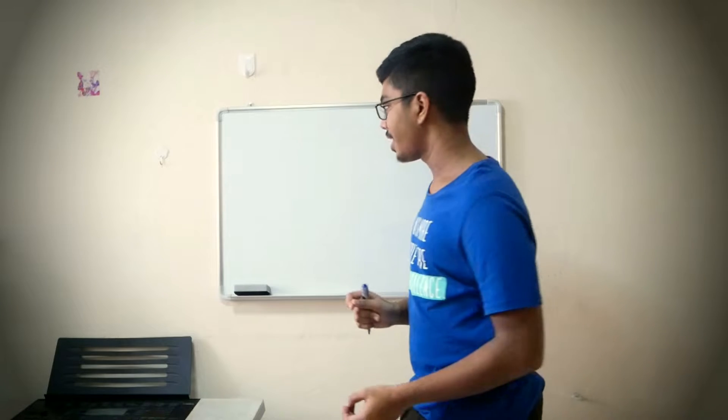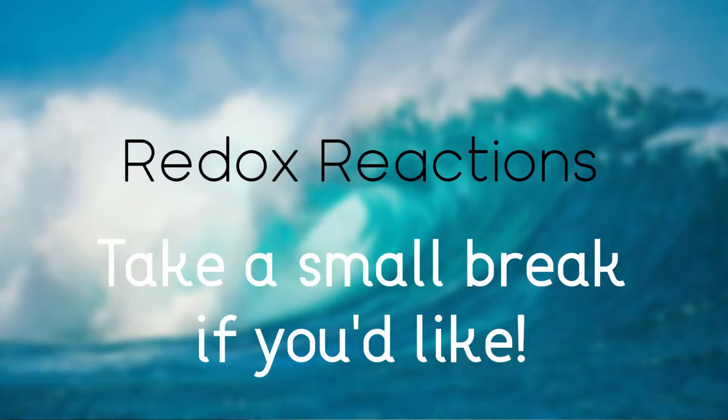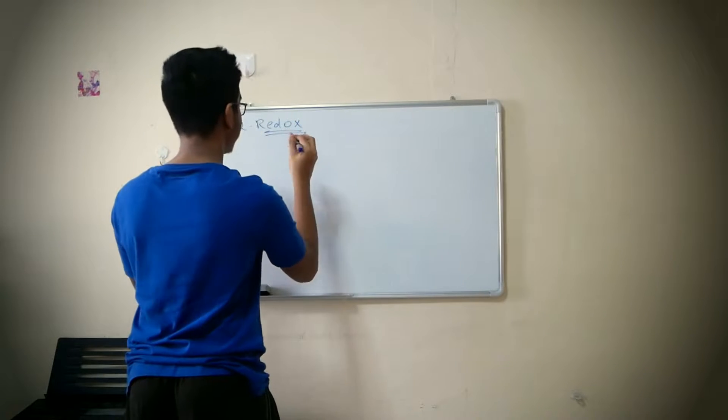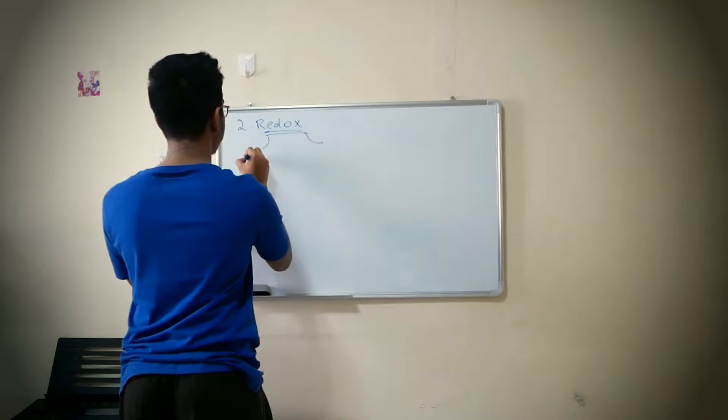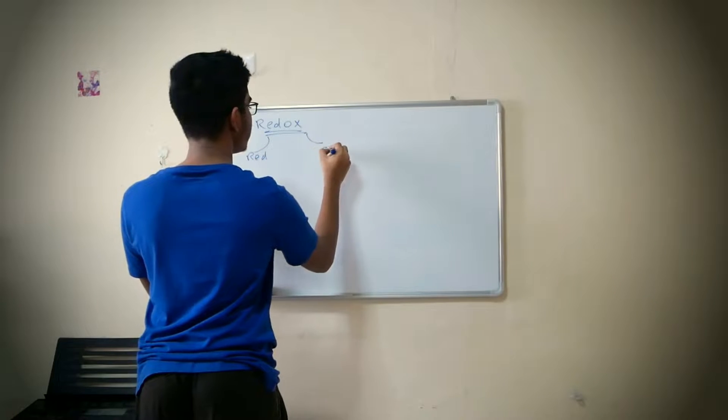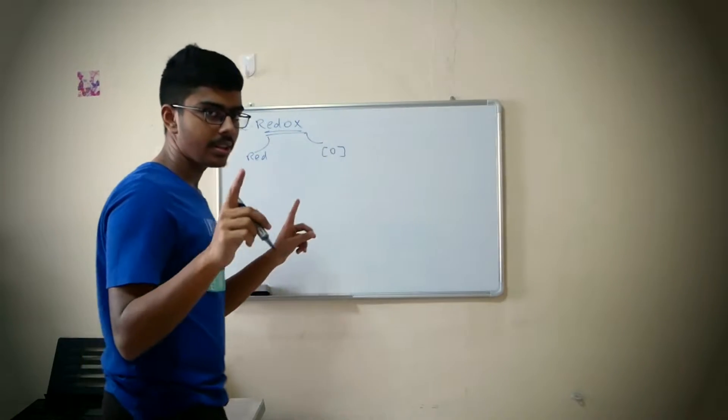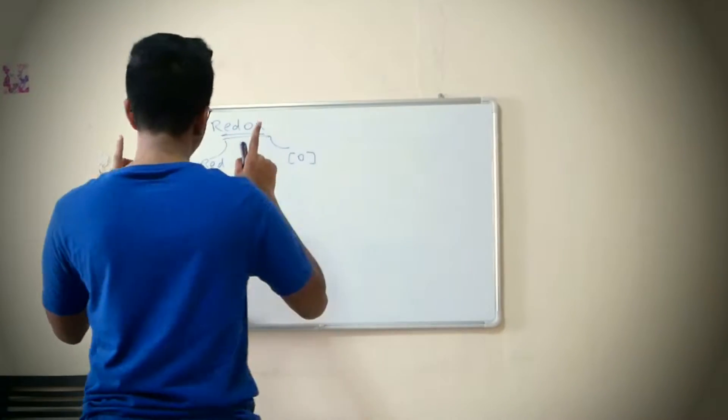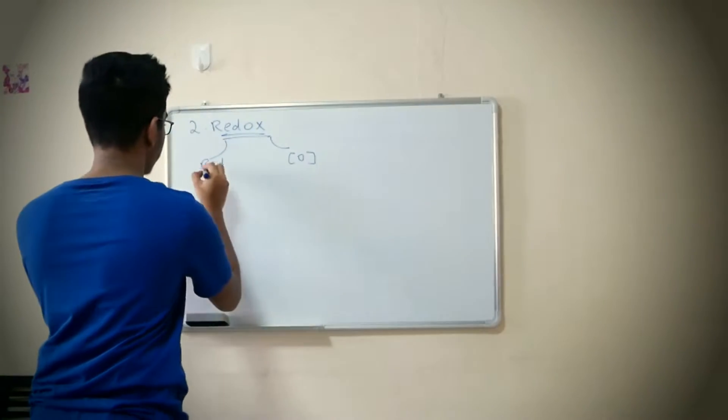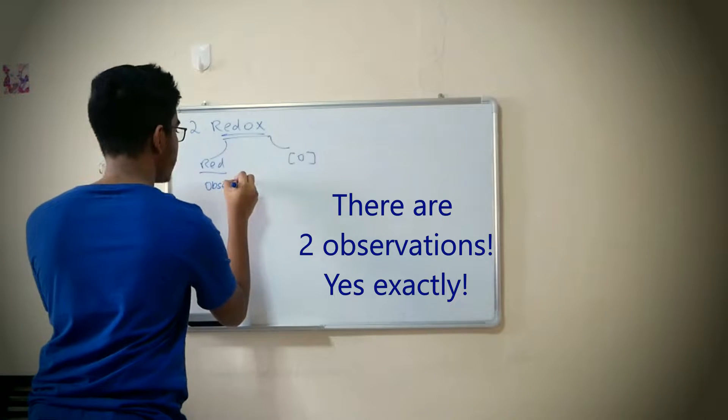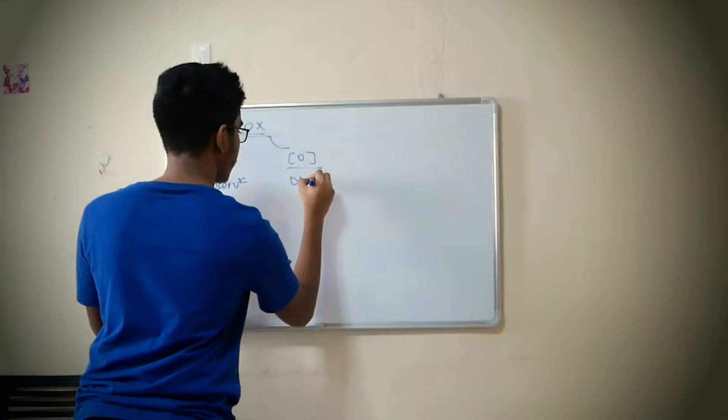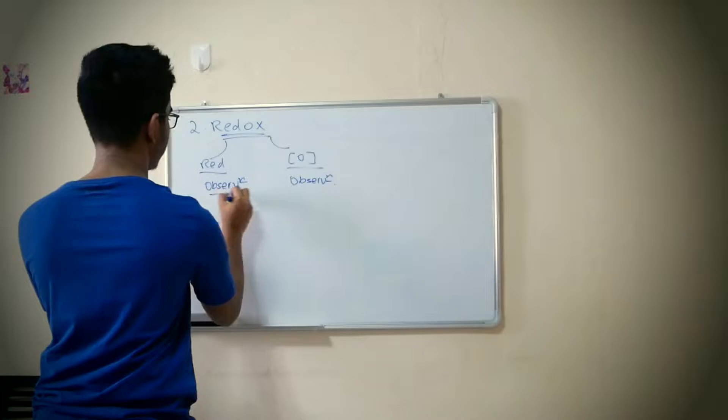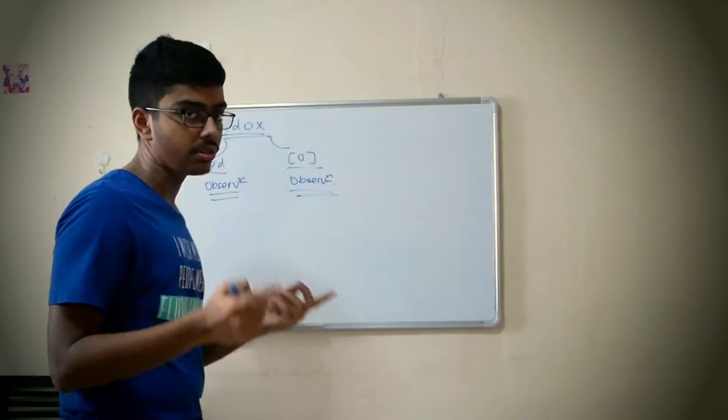Now, the second type of reaction is called redox. Redox reactions. The name itself splits it into reduction and oxidation. And in this type of reaction, there are two important things you need to take note of: the observation for this one and observation for this one.